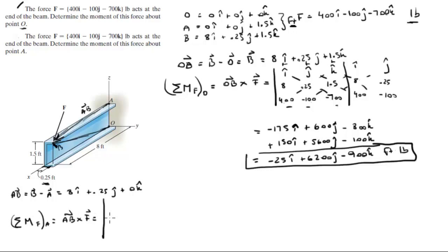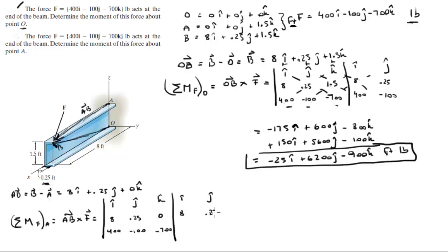I'll move faster on this one since you saw how I did the last one. Set up the matrix with I, J, K. The first row is AB: 8, 0.25, 0. The second row is the force: 400, minus 100, minus 700. Redraw the first and second columns: 8, 0.25, then 400, minus 100. The positive diagonals come out to be negative 175i, plus 0j, plus negative 800k.